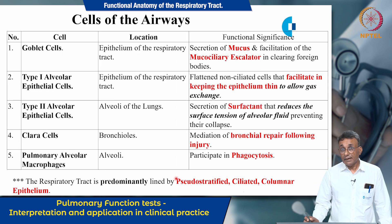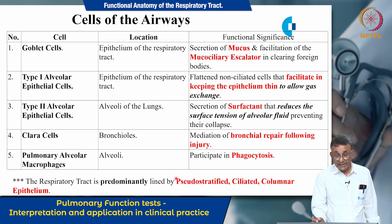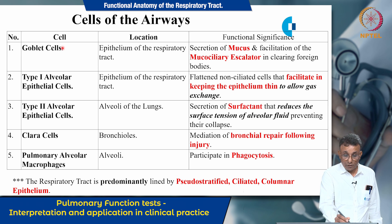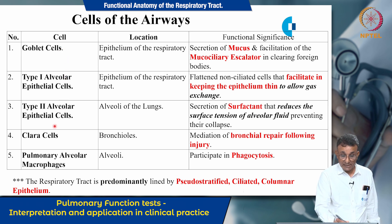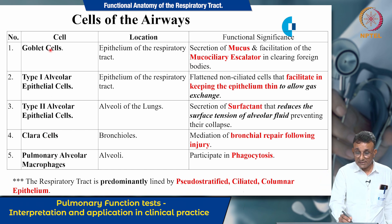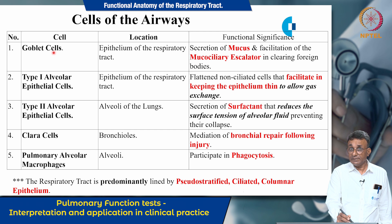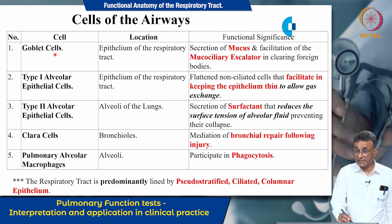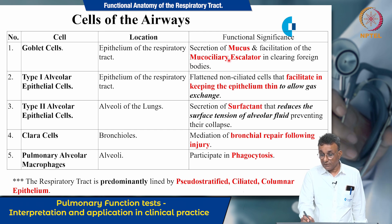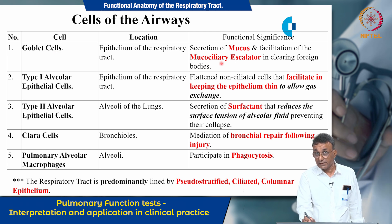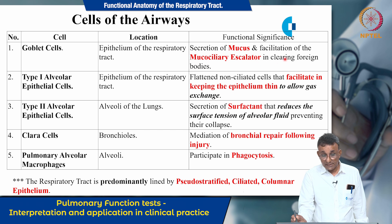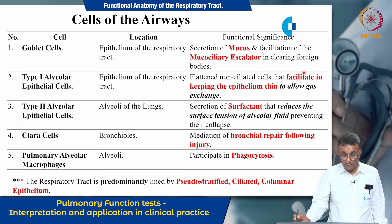Five different types of cells have been differentiated in the respiratory tract: goblet cells, type 1 alveolar epithelial cells, type 2 alveolar epithelial cells, Clara cells, and pulmonary alveolar macrophages. Goblet cells primarily secrete mucus, which is essential for the functioning of the mucociliary escalator that helps in clearing foreign bodies.